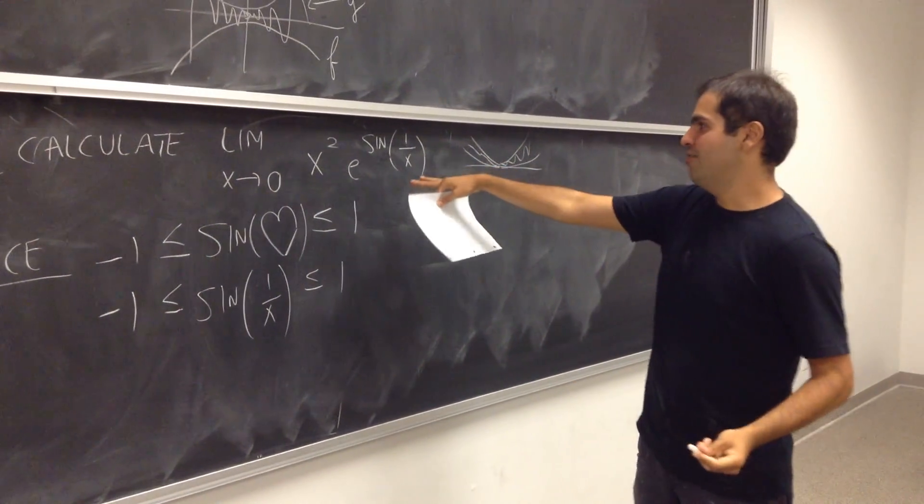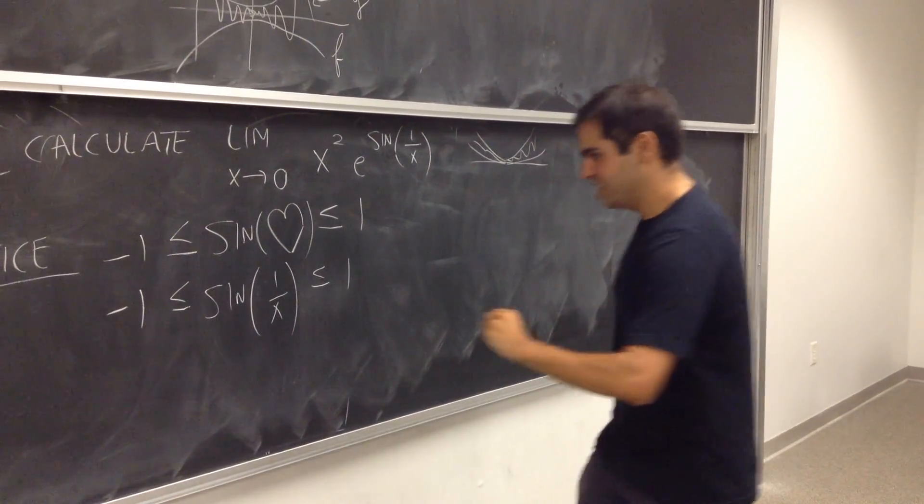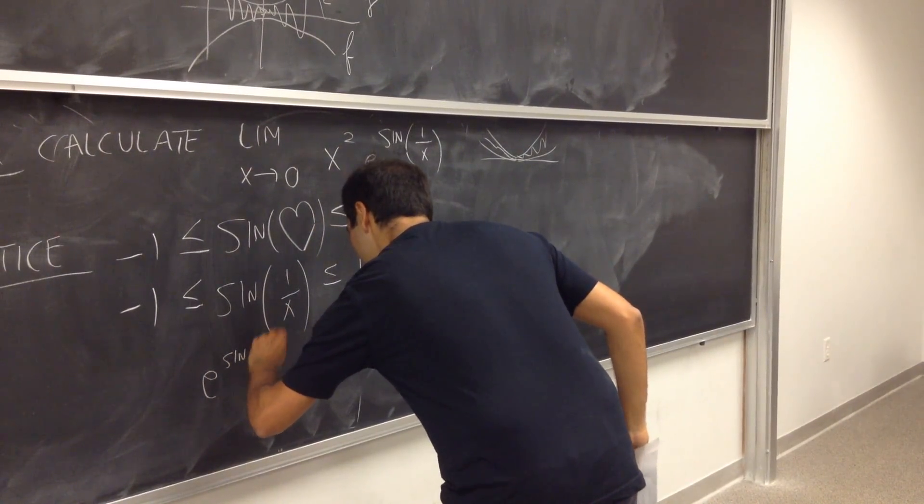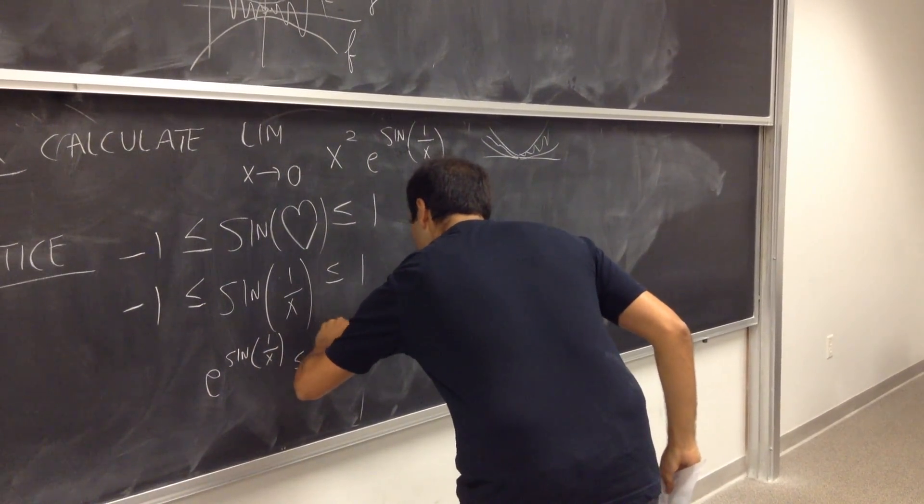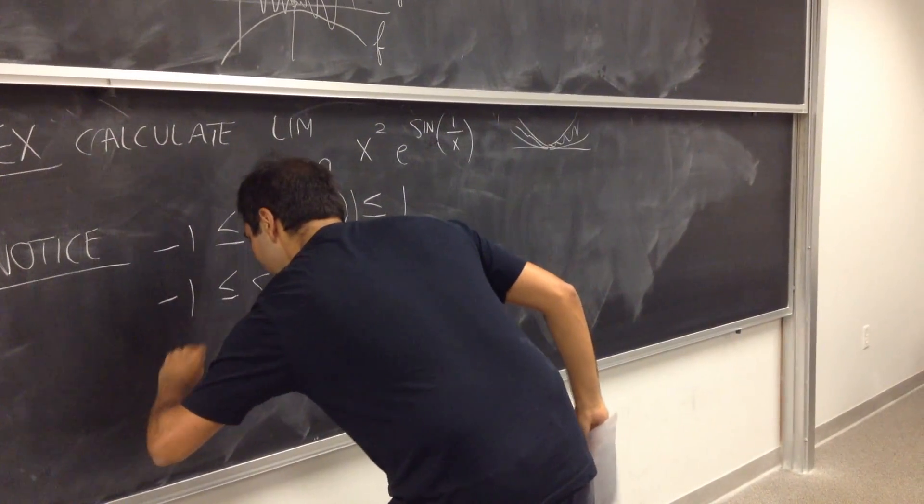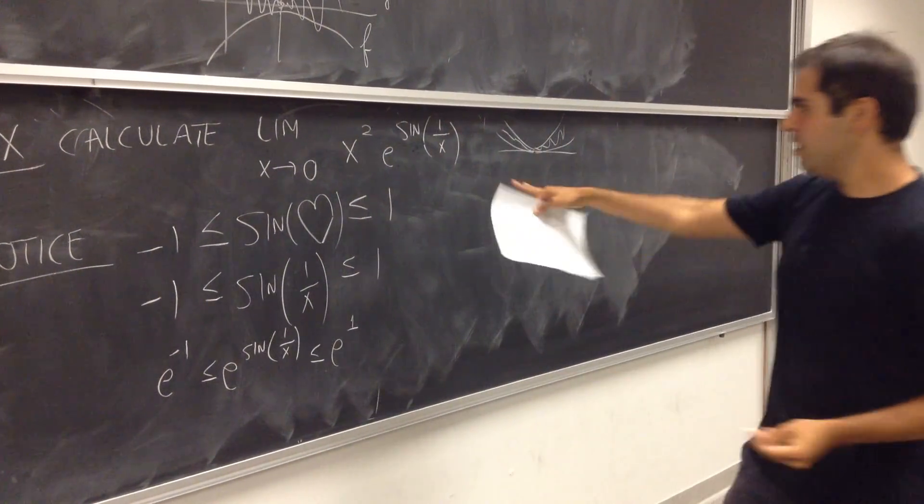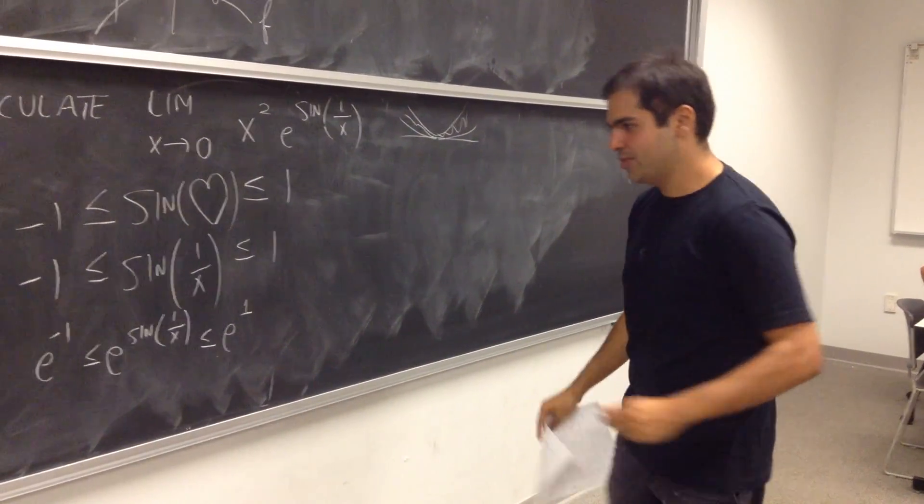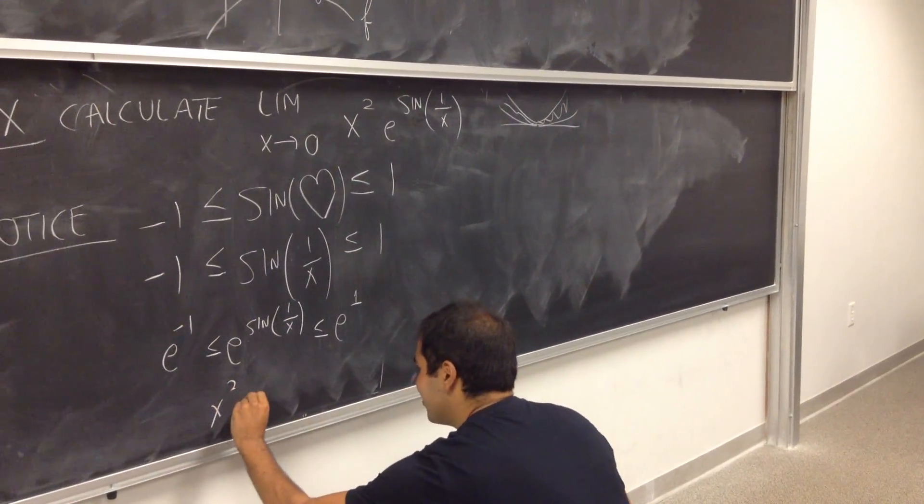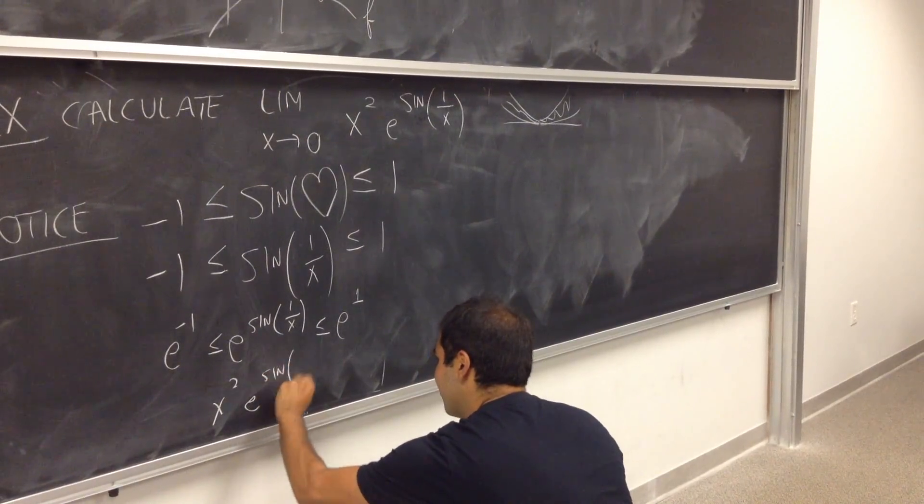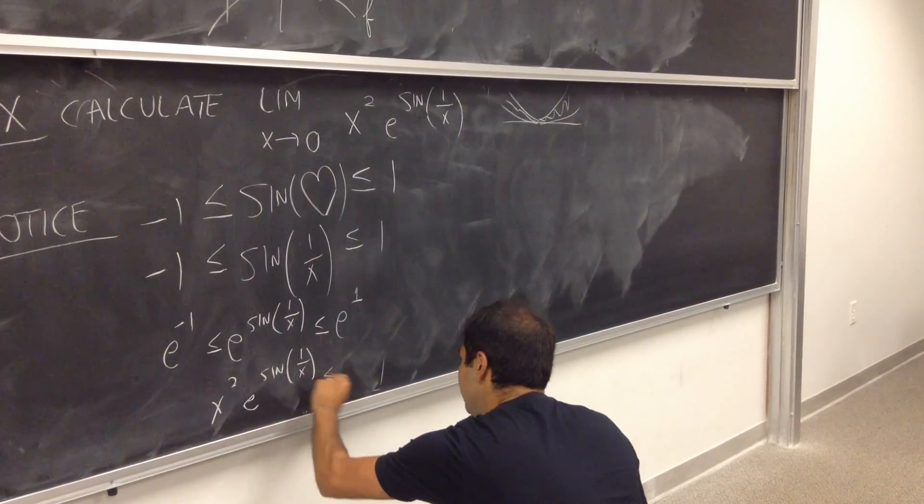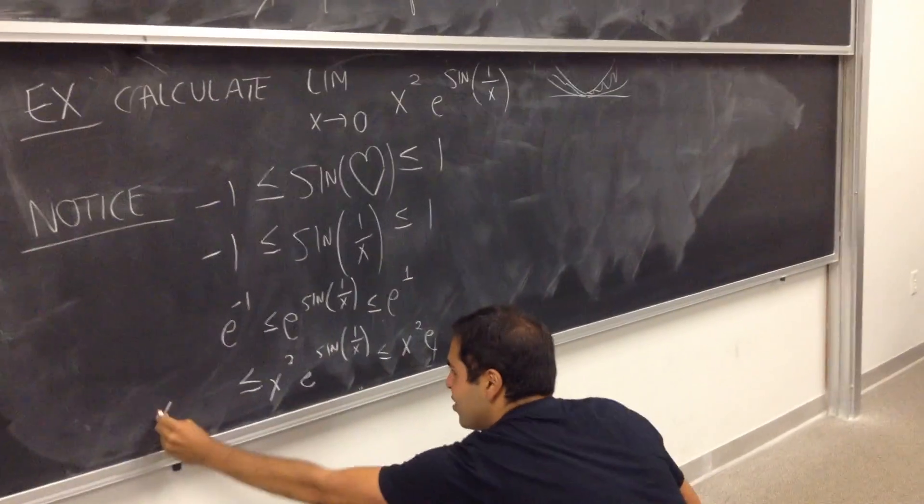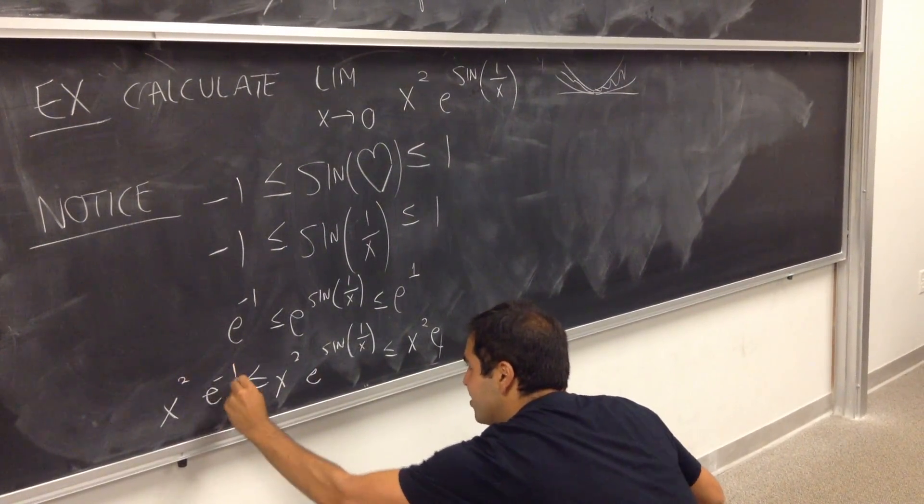And then, how do we get our function here? First, you exponentiate it. So, e of sine of one over x is between e of one and e of minus one. And then lastly, all you have to do is multiply both sides by x squared. So, let me squat a bit. So, x squared e of sine of one over x is between x squared times e and x squared e of minus one.